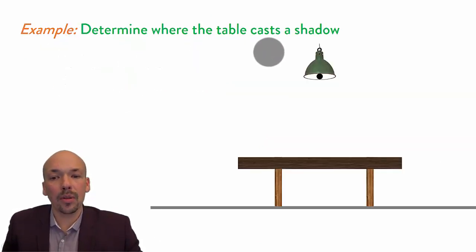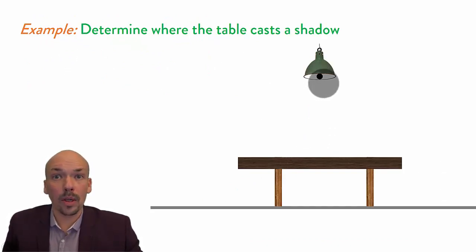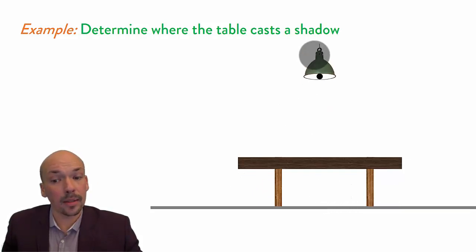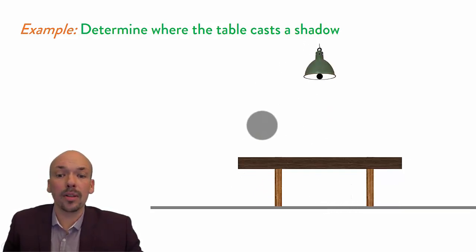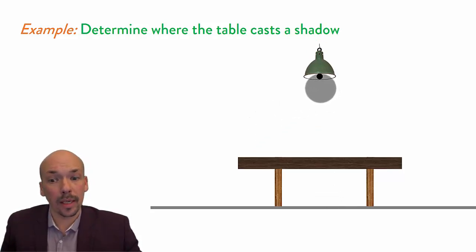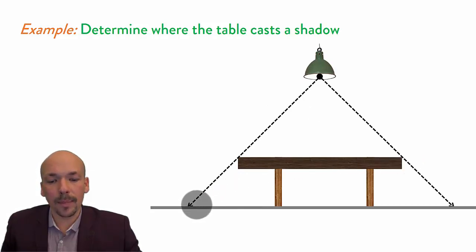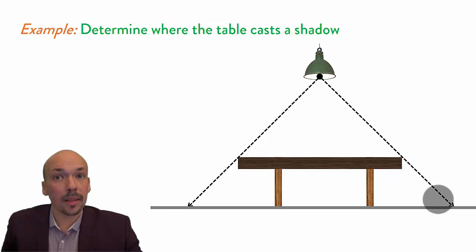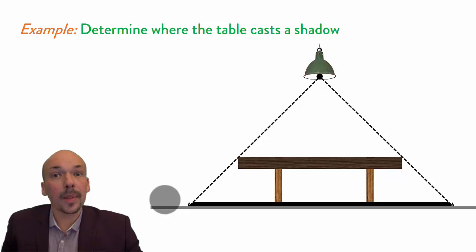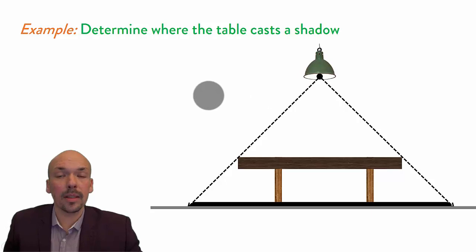Something you need to be able to do is determine the shadow of a table. Here we have a light source, and we know light always travels in a straight line. There will be shadow on the far side because from there you cannot see the lamp. To determine the exact shadow, you draw two straight lines — one to each corner of the table. From where those lines extend, no light can reach from the lamp, so that is where the shadow will be.